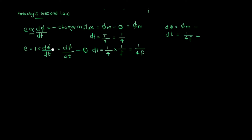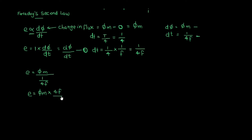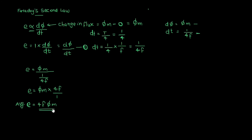We substitute into the equation. e is equal to dφ/dt, which gives us φm divided by dt, equal to φm divided by 1/(4f). Therefore e is equal to φm multiplied by 4f, giving us e equal to 4f × φm.